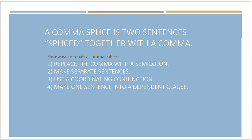So to review: a comma splice is two sentences spliced together with just a comma. There are four ways to repair them: you can replace the comma with a semicolon, you can make separate sentences, you can use a coordinating conjunction, and you can make one sentence into a dependent clause.